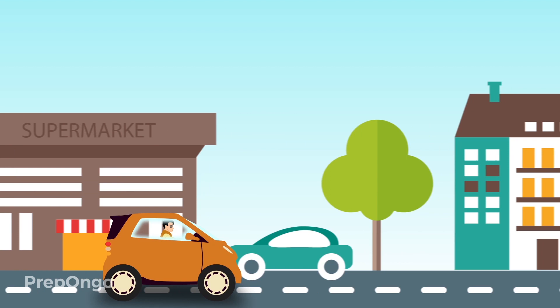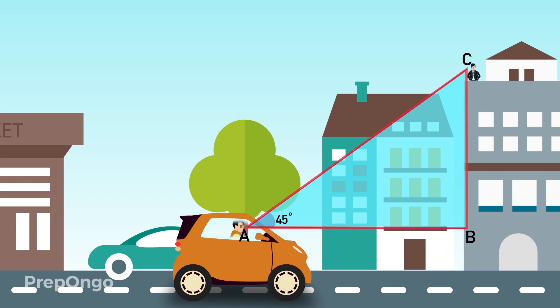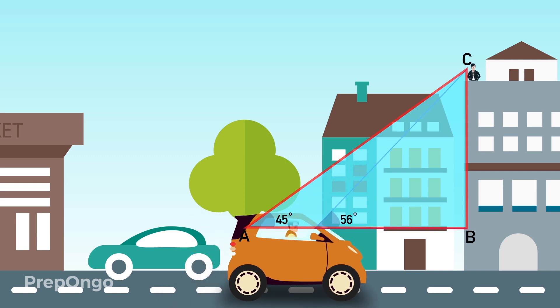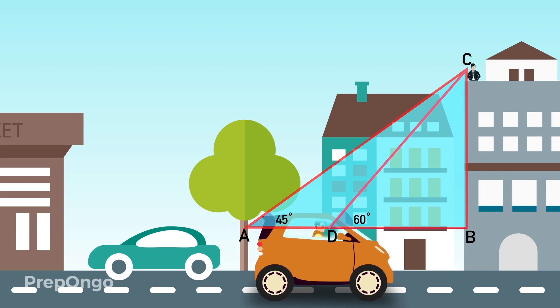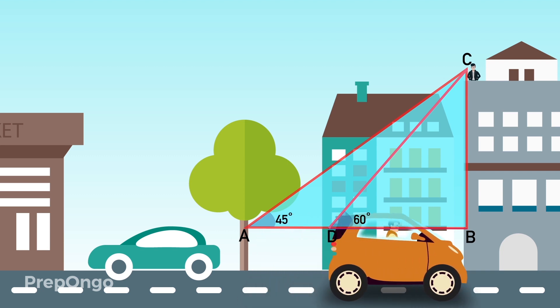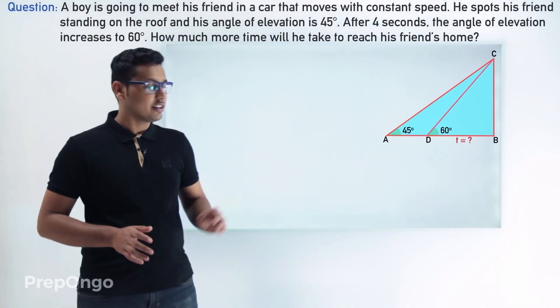You can see that there is a boy going to meet his friend in the car. He finds out that his friend is standing on the terrace and the angle of elevation is 45 degrees, so in triangle ABC, angle A equals 45 degrees. He travels four seconds more and finds that the angle of elevation has increased to 60 degrees, so angle D of triangle DBC equals 60 degrees. We have to find how much more time he will take from point D to point B. We are getting two triangles: triangle ABC and triangle DBC.